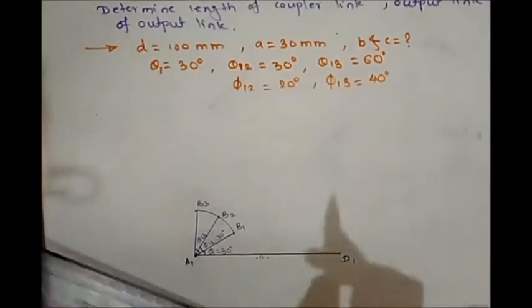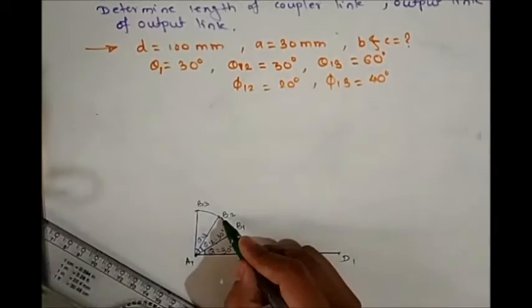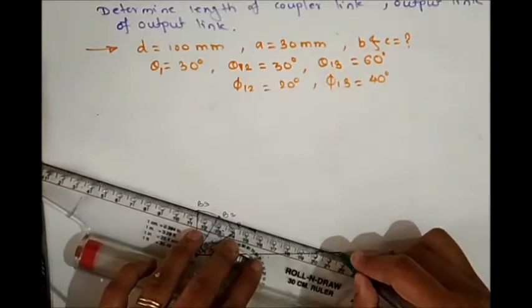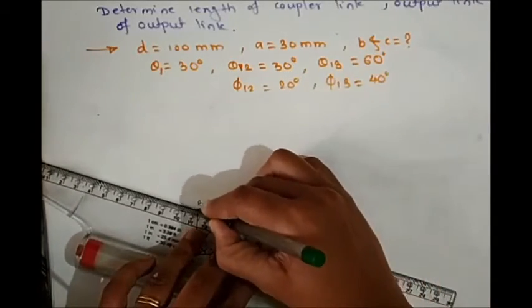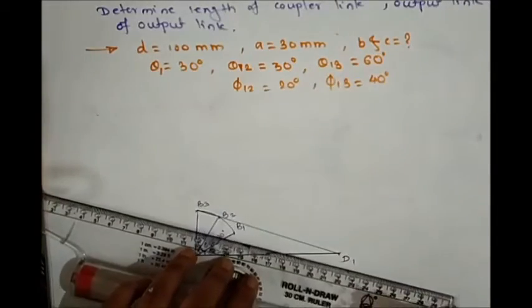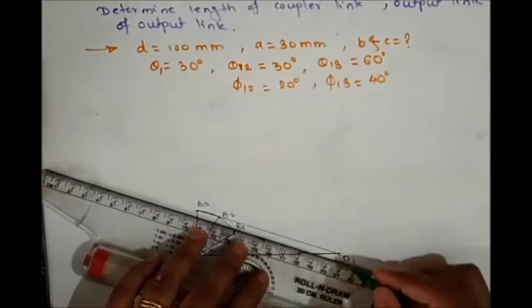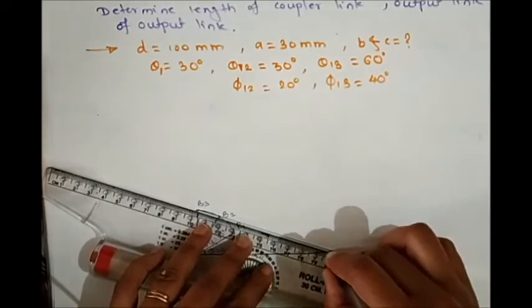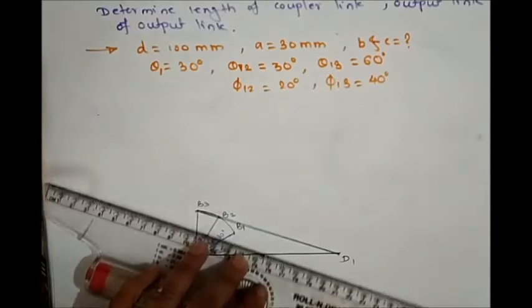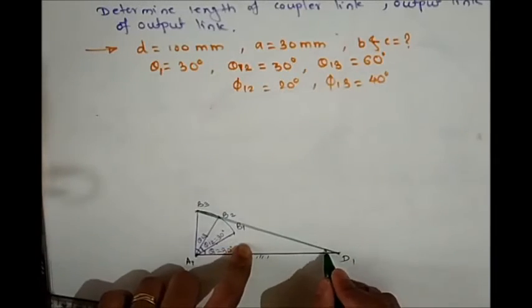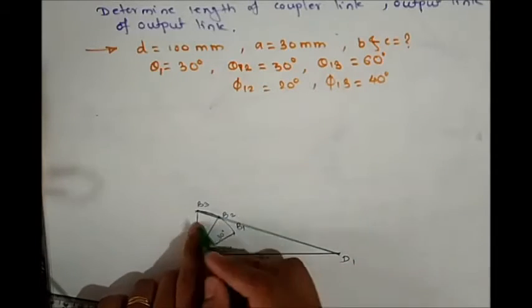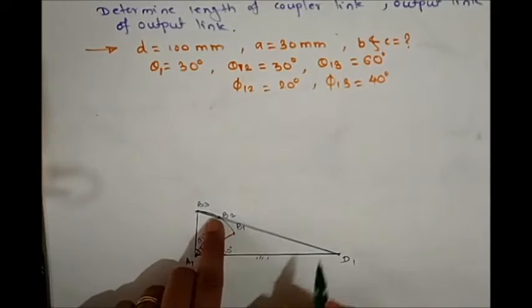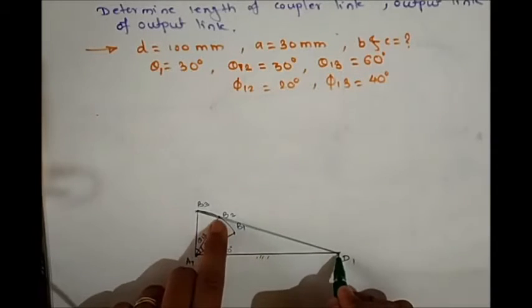Now join B1, B2, and B3 with D1, the fixed link. Draw line D1 B2 and join B3 with D1.